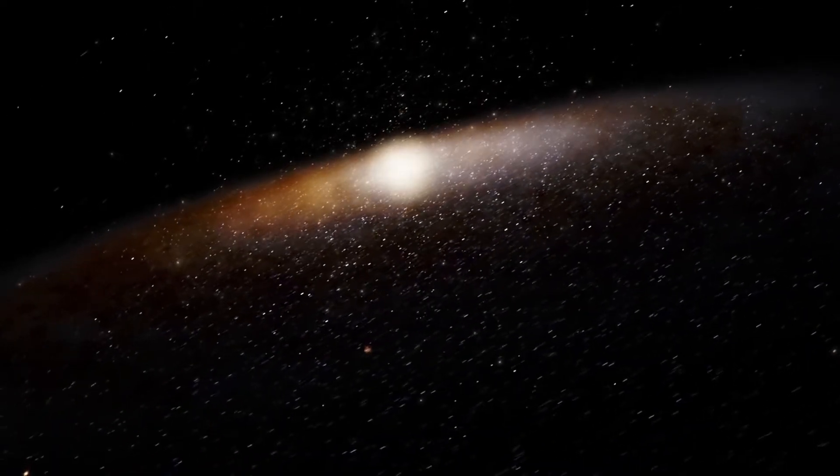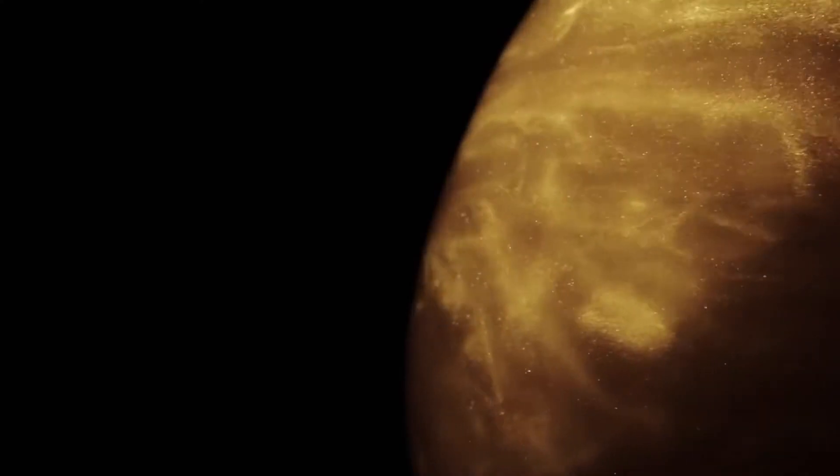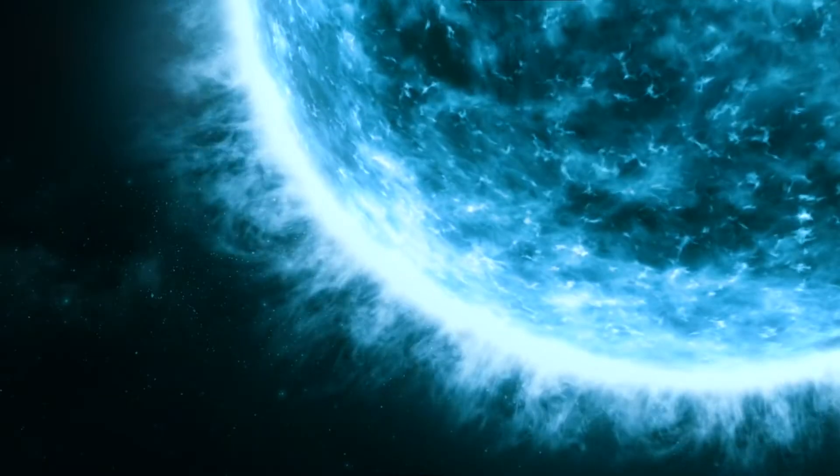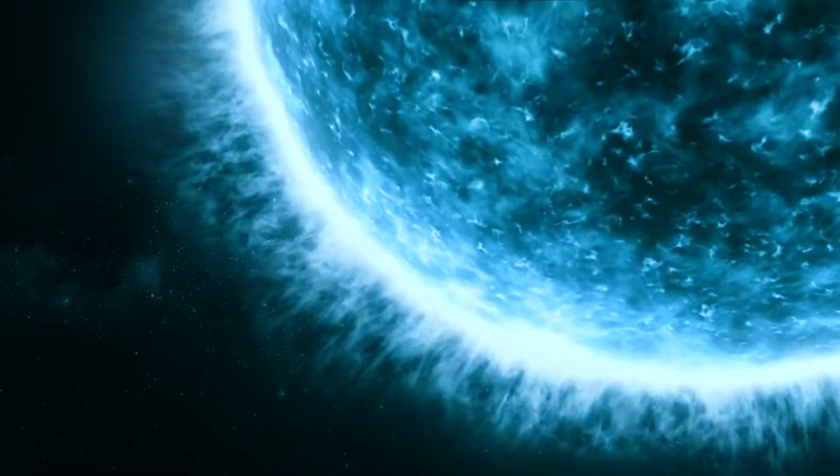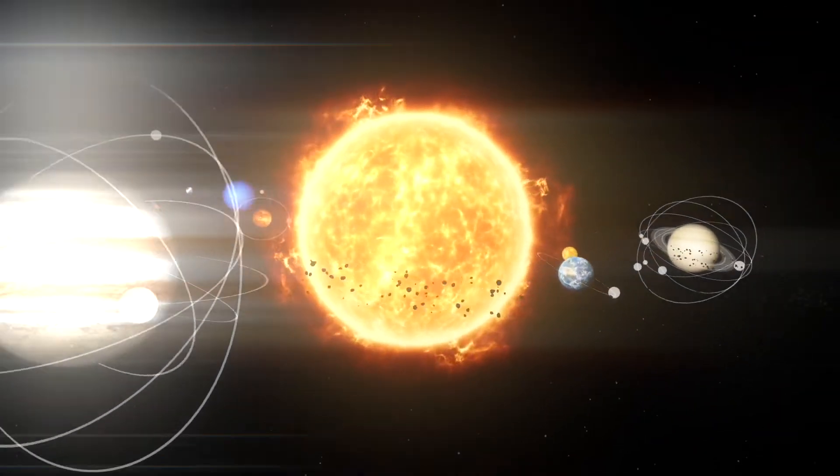Hot giant stars like this tend to burn through all of their hydrogen fuel very quickly, and so they don't live for very long, at least on astronomical timescales. Stars like Kelt 9 typically only shine for less than a billion years. Compare that to our Sun, which is expected to live at least 10 times as long.